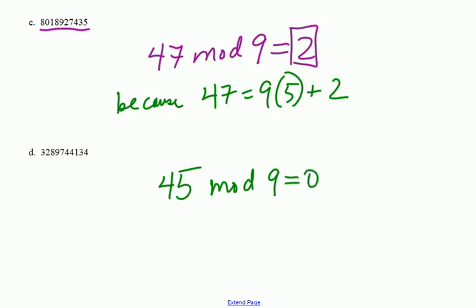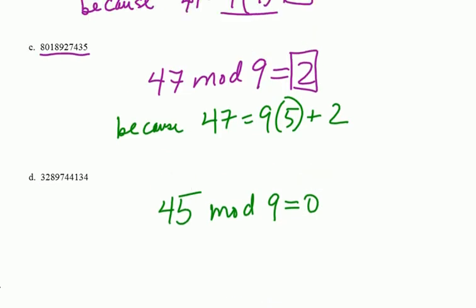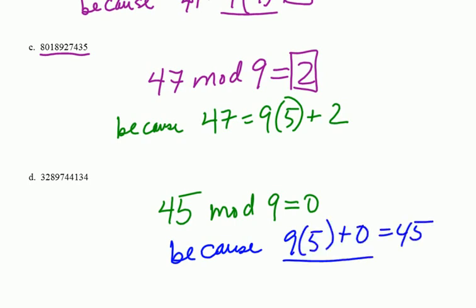Let's think about why that works in terms of, well, it's because 9 times 5 plus 0 is 45. And that's the use of the division algorithm to figure out what your checksum is, or to check your modulus.